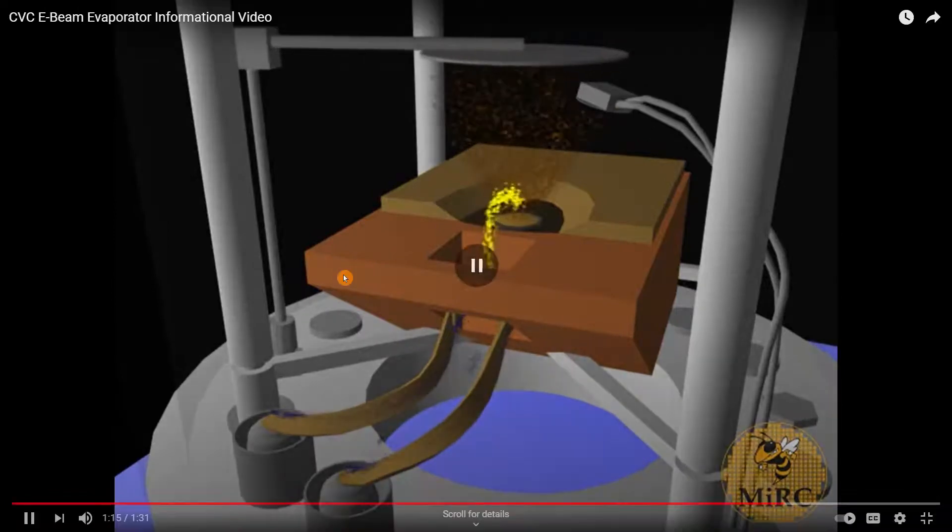Once the desired amount of metal is reached, the material has evaporated and condensed on the substrate to become the film. Once you reach the desired thickness, you close the shutter and turn off the electric current, turning off the e-beam. The process is finished.